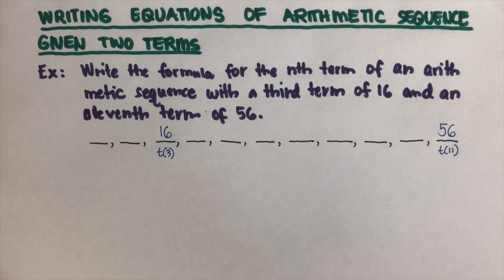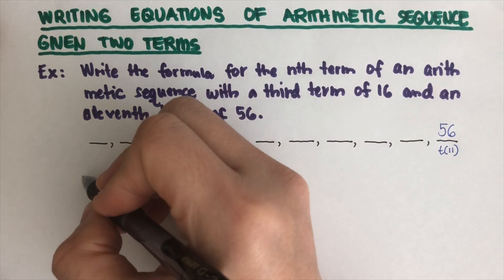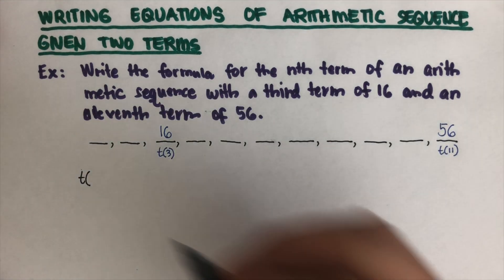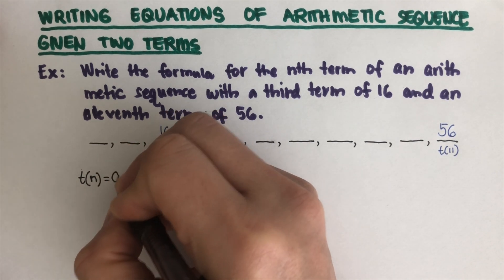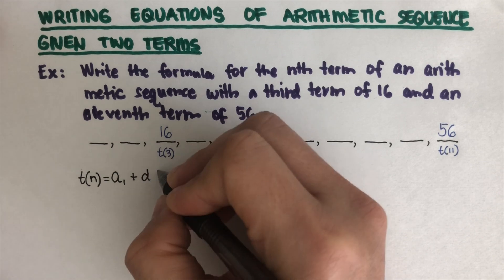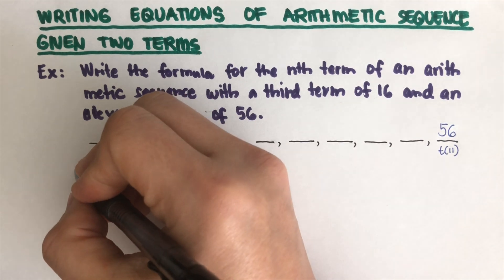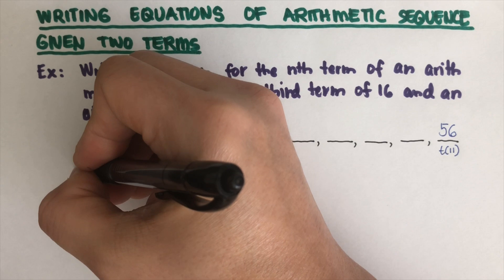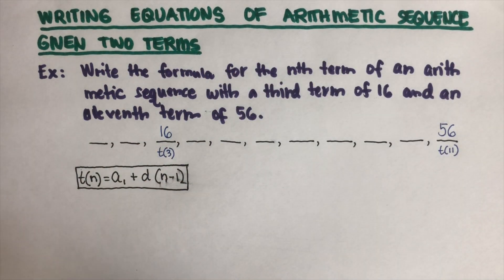Next, we are going to find the nth term, so we write the general formula: t(n) = a1 + d(n − 1), where a1 is the first term. This formula is from the previous sections. If you want to see that video, I will put the link in the description box below.